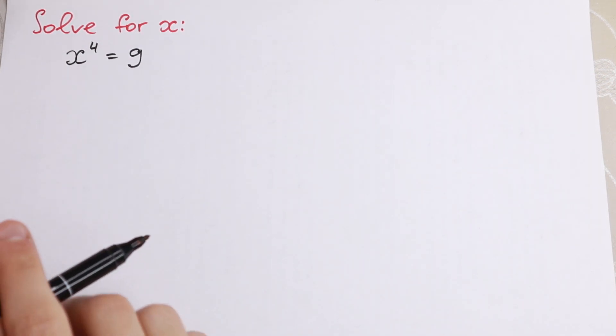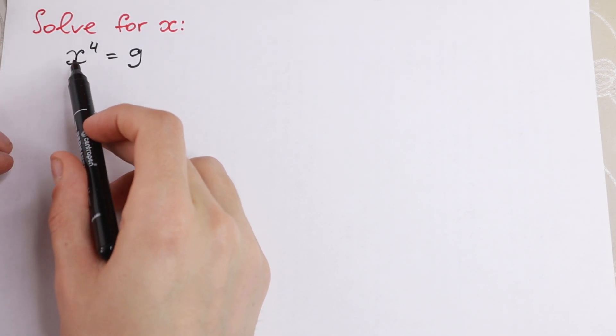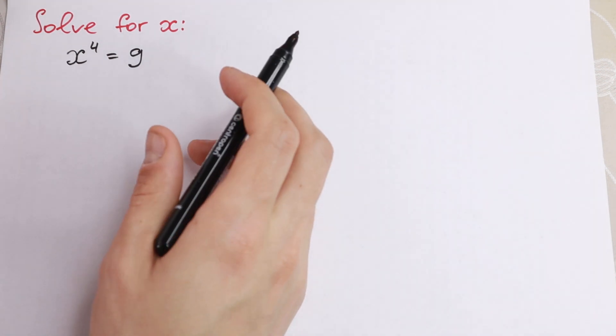Hello everyone and welcome back to MathMod. In this video we're going to solve this interesting equation x to the fourth power equal to 9. How can we solve this equation?